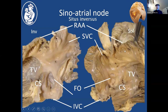Looking inside the right atrium in a solitus arrangement, you can see the orifice of the superior vena cava and the crista terminalis. The sinus node is located to the left of the cava in the solitus configuration. In an inverted atrium, it's just a mirror image — the crista is to the right of the inflow of the superior vena cava. So these are just mirror images of each other.